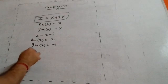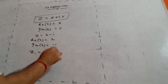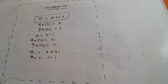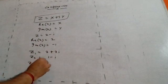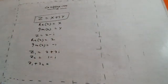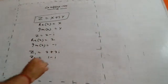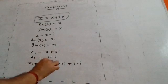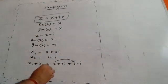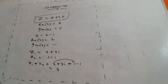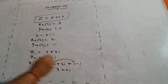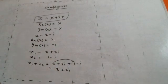For addition: given z₁ = 2 + 3i and z₂ = 1 - i, find z₁ + z₂. Add real parts to real parts and imaginary parts to imaginary parts. So (2 + 3i) + (1 - i) = (2+1) + (3i - i) = 3 + 2i. The answer is 3 + 2i.